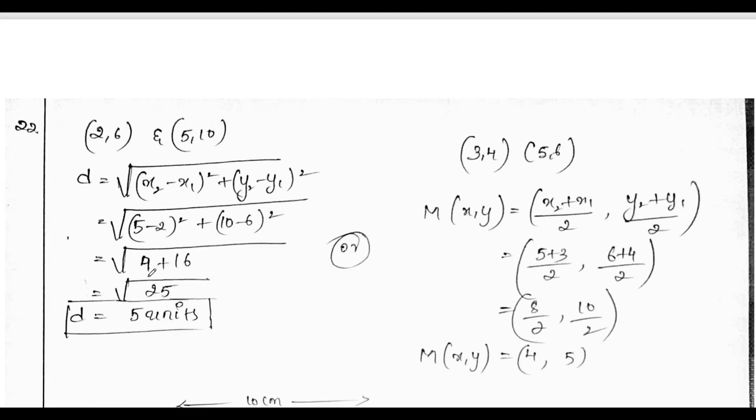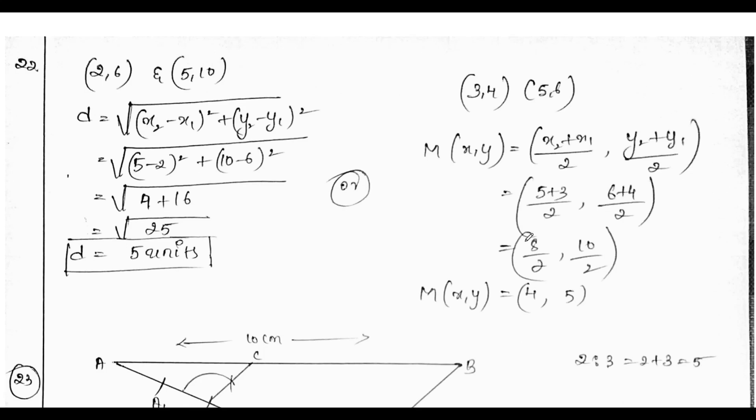22nd question. The distance between the two points, we get distance as 5 units. The midpoint is 4 comma 5. All these questions are from my worksheet. That means, I have picked the question from the worksheet based on the concept.